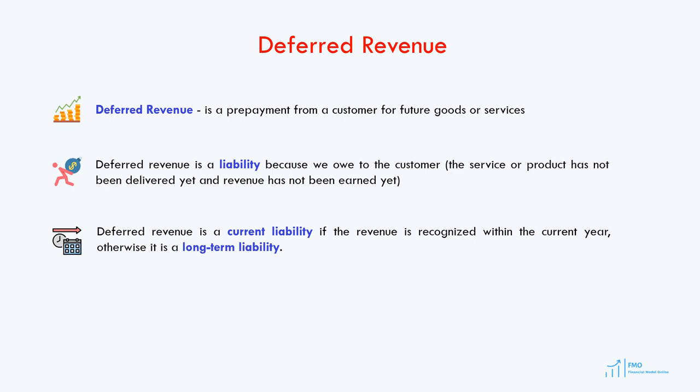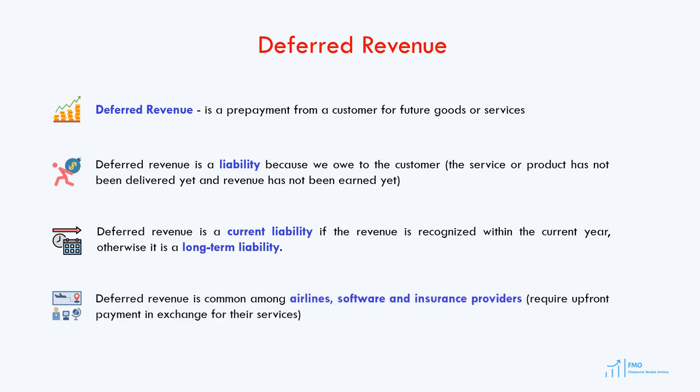If the revenue associated with the deferred revenue is expected to be recognized within the current year, then it is going to be a current liability. Otherwise it will be a long-term deferred revenue liability. Deferred revenue is common for all companies, but a significant deferred revenue liability is typically accumulated by companies that have a business model where they require upfront payment in exchange for their service or products. These are companies that operate in the airlines, software, or insurance industries.